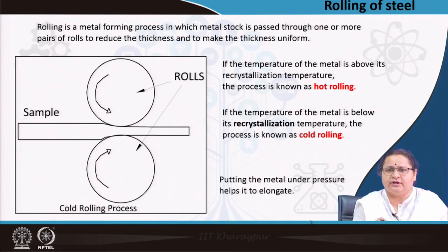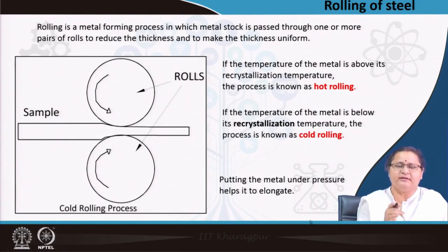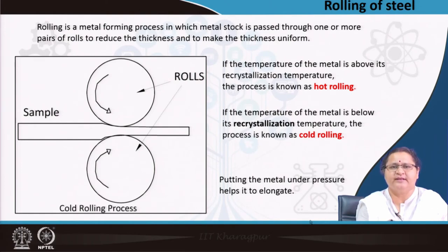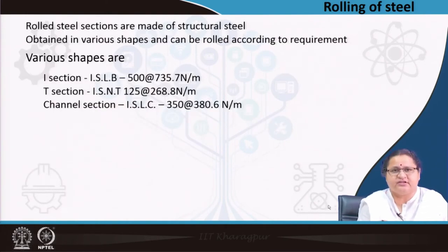By putting the stock under the pressure of rolls, we get different cross sections which can be used for our purpose. These rolled steel sections can be directly used for structural purposes. We can get different shapes, and the IS code gives the details of such shapes. Usually, there is a thin member called the web and a projected member called the flange for every section.